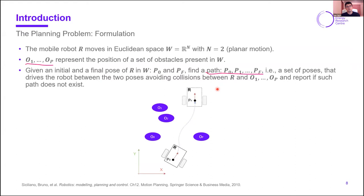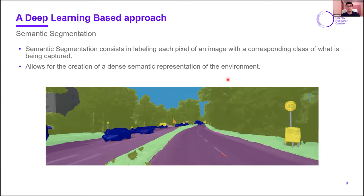In order to create such a representation of the environment that allows planning a path, we use deep learning. As many of you know, deep learning has had a central role in enabling some of the most impressive innovations in the field of autonomous systems over the last years, particularly for perception related tasks. In this case we will be using semantic segmentation, which consists in labeling each pixel of an image with a corresponding class of what is being captured. So if we have a front-facing camera mounted on a vehicle or robot, we can take the images, process them for semantic segmentation, and at the output what we have is a bunch of labels that identify on each pixel whether it corresponds to, for example, a car or trees or the sky or the road. As we will see, this is very useful because it allows for the creation of a dense semantic representation of the environment which has a lot of information.